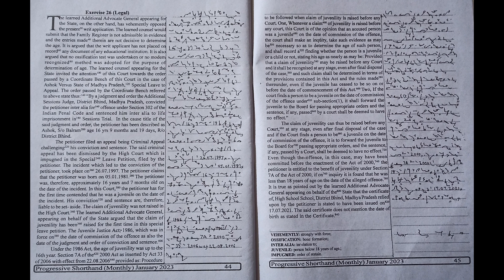If the court finds a person to be a juvenile on the date of commission of the offense under subsection 1, it shall forward the juvenile to the board for passing appropriate orders and the sentence, if any passed by a court shall be deemed to have no effect. The claim of juvenility can thus be raised before any court at any stage even after final disposal of the case. And if the court finds a person to be a juvenile on the date of commission of the offense.